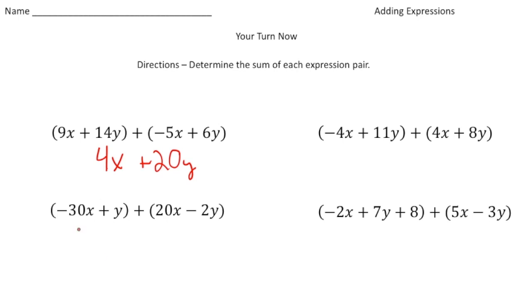The next one, we've got some negative terms here. So negative 30x and positive 20x, that'll give us a negative 10x. And then, really, this is a 1y. So 1y minus 2y gives us a negative 1y, or you can write that just as minus y.